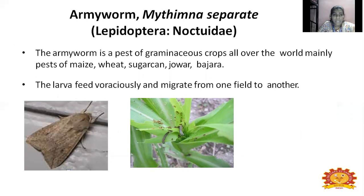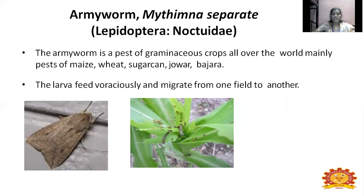The next pest is armyworm, Mythimna separata, a Lepidoptera pest. It is a pest of Gramineae species — present widely in maize, wheat, sugarcane, jowar, and bajra — having different kinds of hosts. The larvae feed voraciously, which is the main cause of damage. They also migrate from one field to another field, so they feed voraciously in one area and then move to the next.